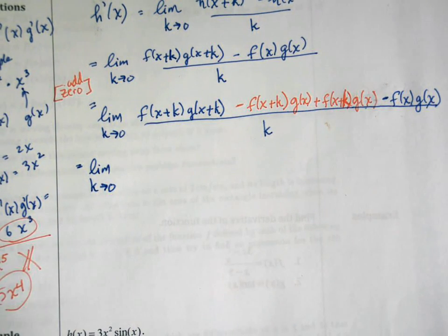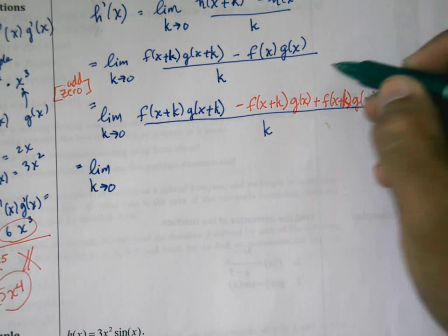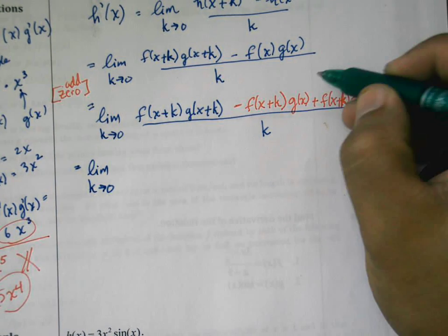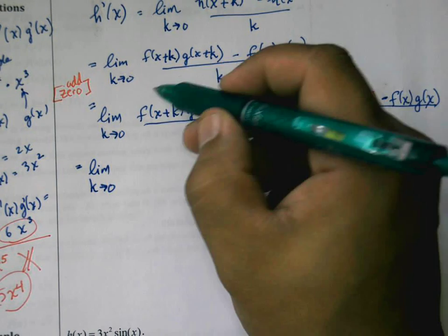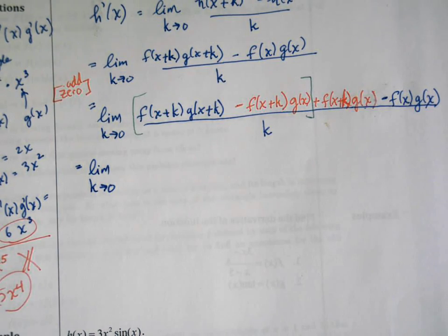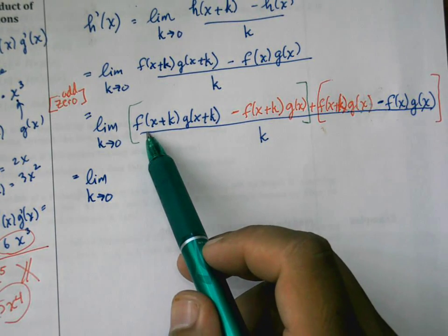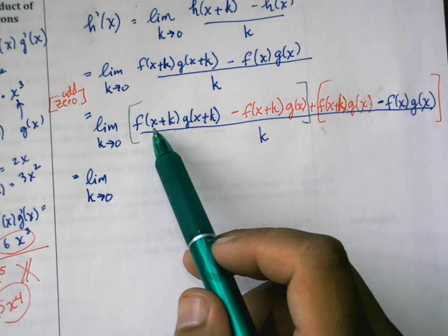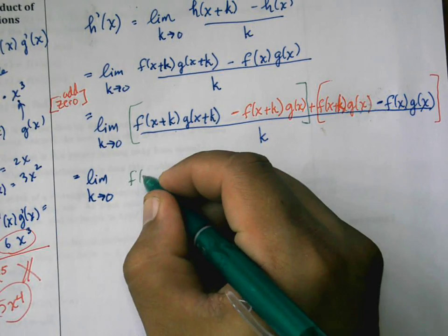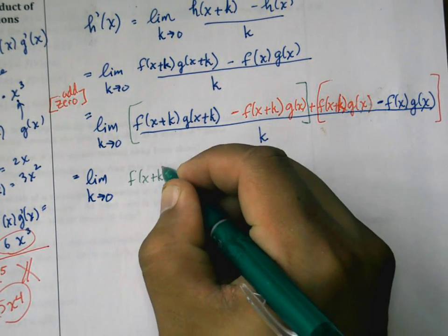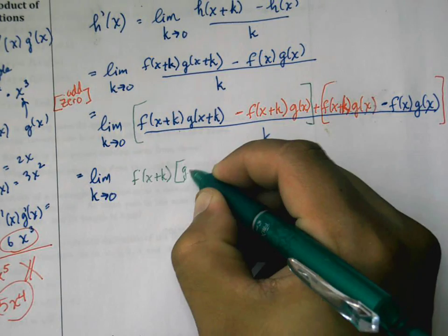Now what I'm going to do from this point on is do some regrouping. I'm going to just take this first part here and group it together, and then I'm going to take the second part and group that together. In this first part you can see that I have f of x plus k in common, so I can factor that out.